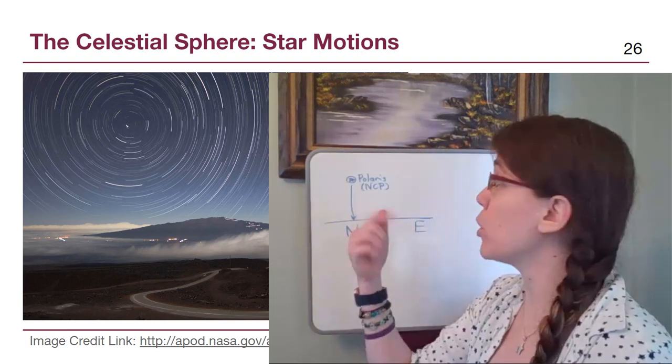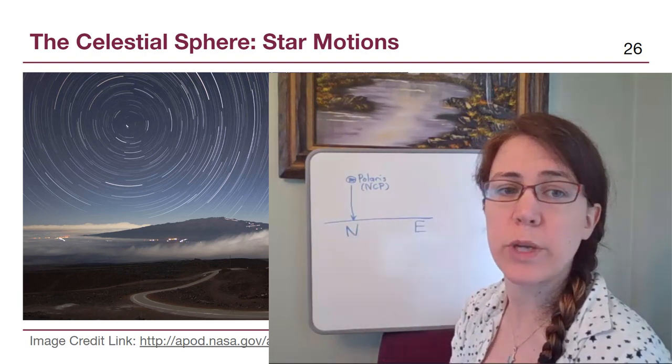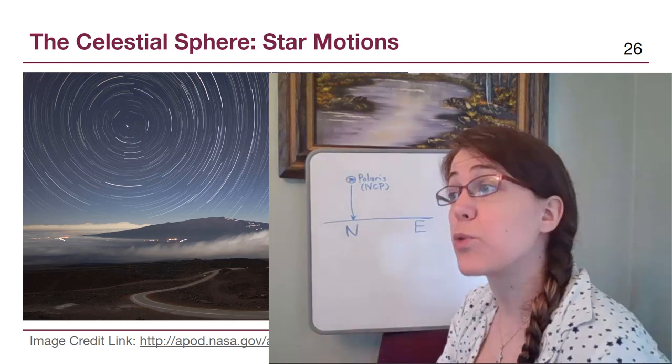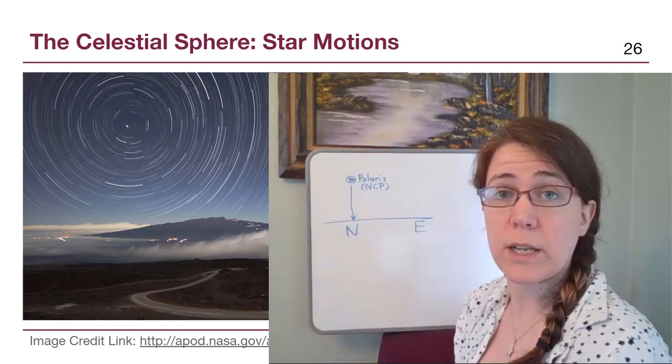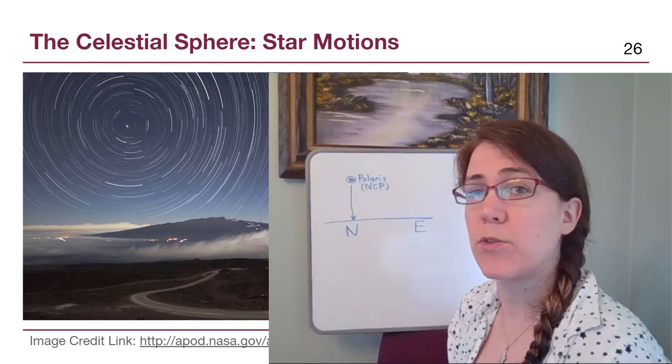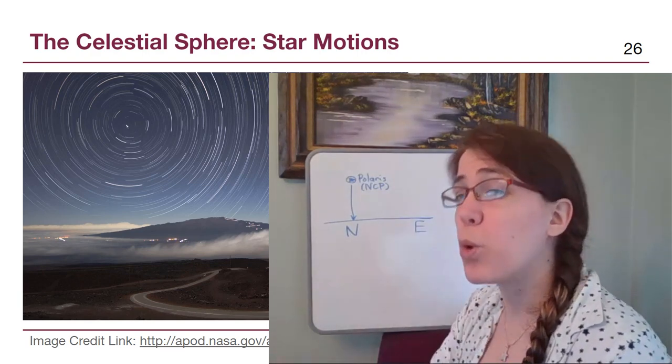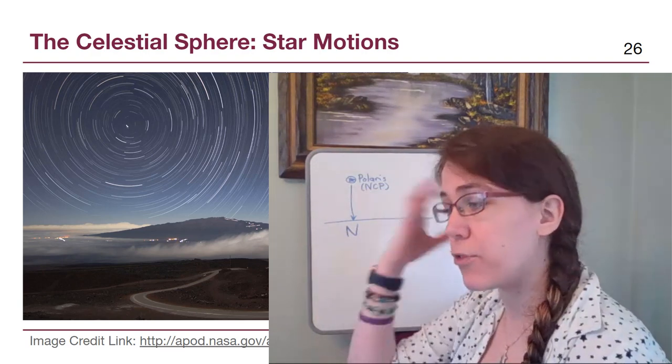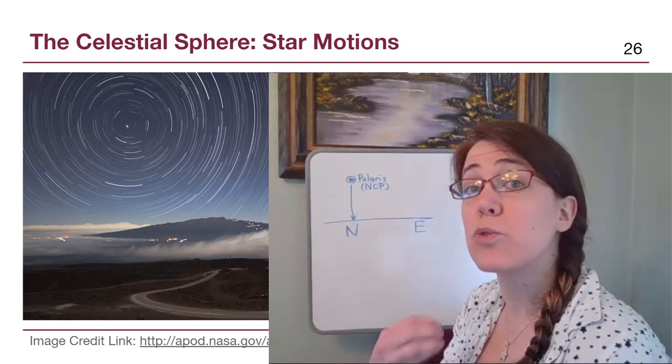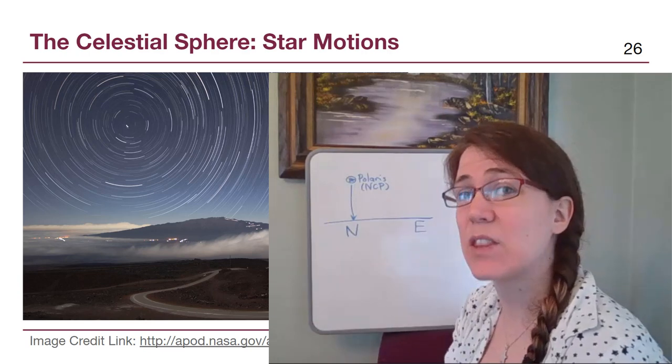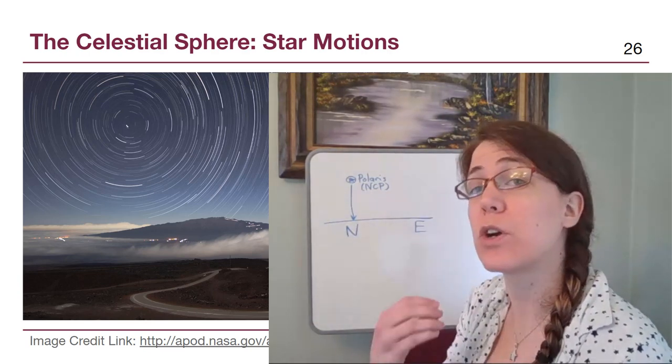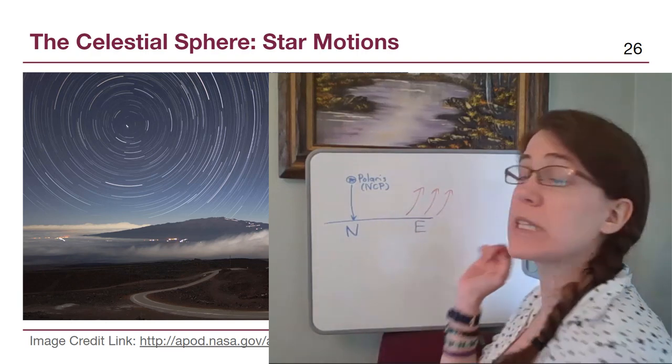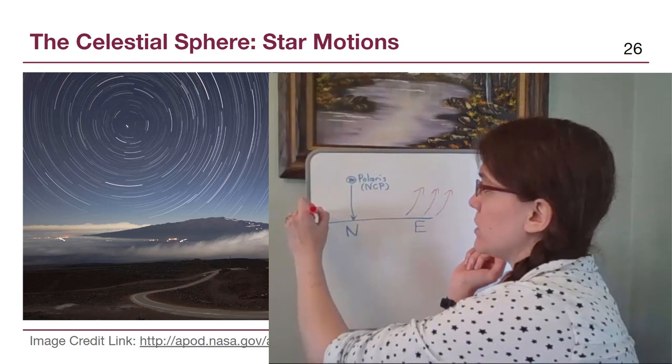Stars rise and set or go around in big circles like some near Polaris. Stars move because the Earth is rotating. The Sun rises and sets every single day because the Earth is rotating. We can use our understanding of where the Sun rises and sets. The Sun rises in the east every morning and sets in the west every evening. That means stars also rise in the east, so stars are rising with arrows going upwards in the eastern direction.